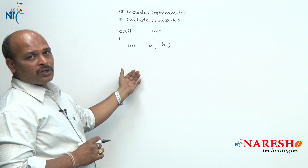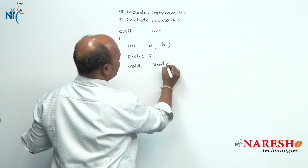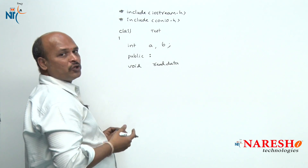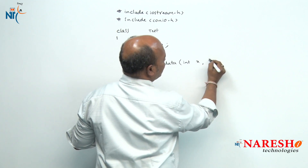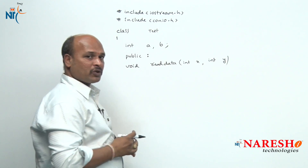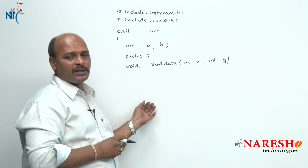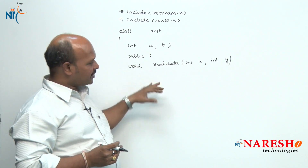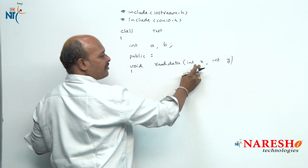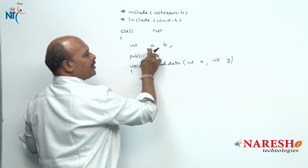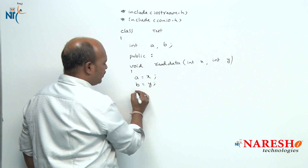Now I want to send values to a and b. Under public, I have void read_data with arguments int x and int y. I am going to write the function definition inside the class because there are no complex statements. The parameters are int x and int y — x is assigned to a and y is assigned to b.